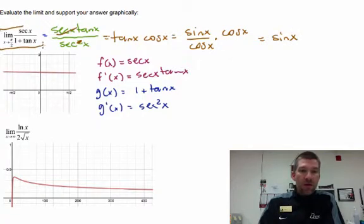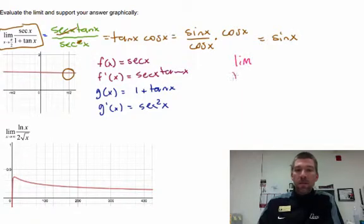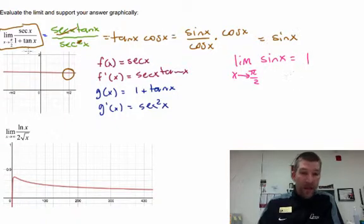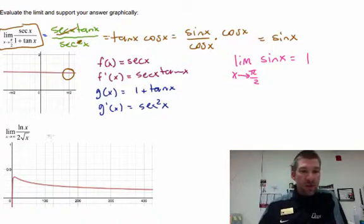we can go from this guy right here, which is undefined on top, undefined on bottom, but clearly approaches a specific number, to our new problem, which says the limit as x approaches pi over 2 of the sine of x. Now you can plug pi over 2 in there, and you get 1. And that looks like what it should be. So L'Hopital's rule to the rescue. It's a good thing.